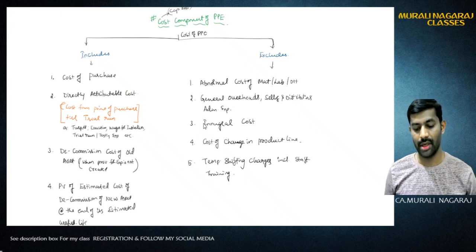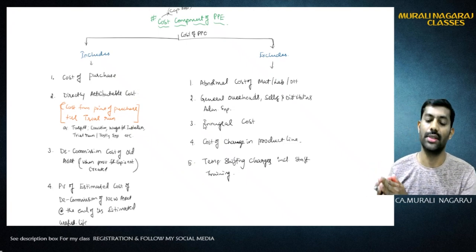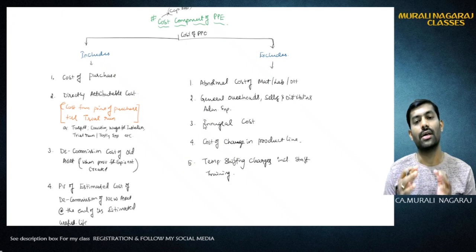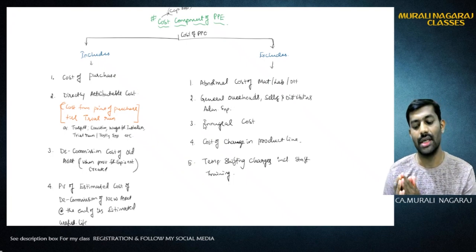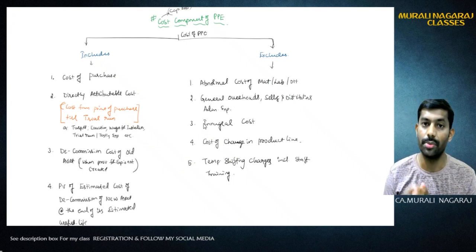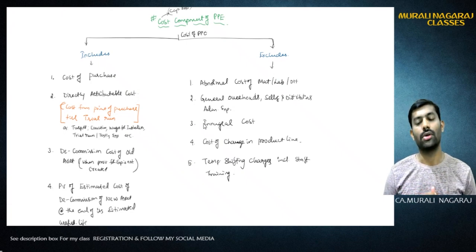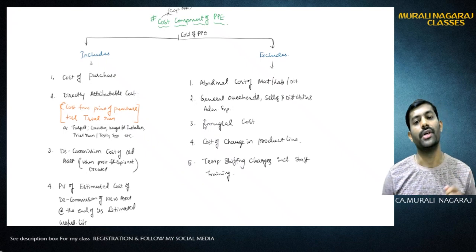Now, what costs are NOT to be included - the exclusions list: number one, abnormal cost of asset - material, labor, overhead used abnormally should not be capitalized. Number two, general overheads such as selling, distribution, and administrative expenses. Number three, inaugural cost. Number four, cost of change in a product line. Number five, temporary shifting charges including staff training costs.